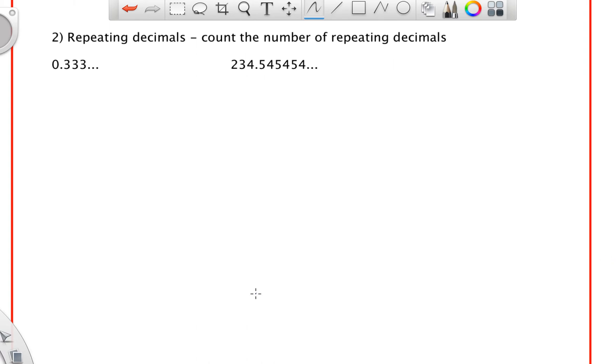So repeating decimals. Sort of starts the same. You count the number of repeating decimals. So that's step one. So the number of repeating decimals here is one. So it's three, three, three. I don't care that there are more threes here. The three is what's being repeated. So there is one repeating decimal.